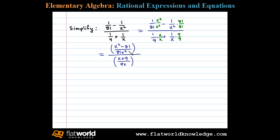To divide fractions we know we multiply the numerator by the reciprocal of the divisor. In this case we'll multiply by 9x over x plus 9. Now we're left with multiplication so we'll factor this and then cancel.